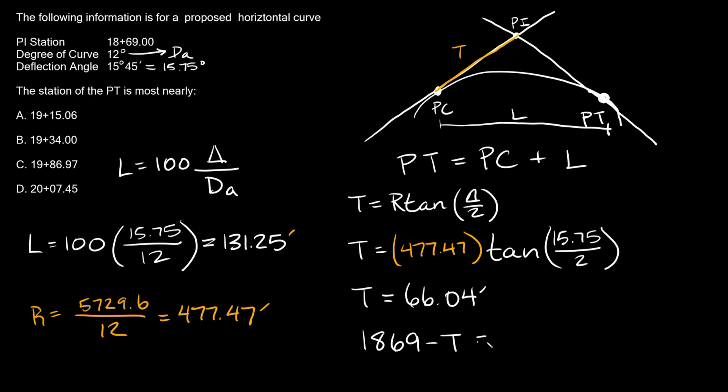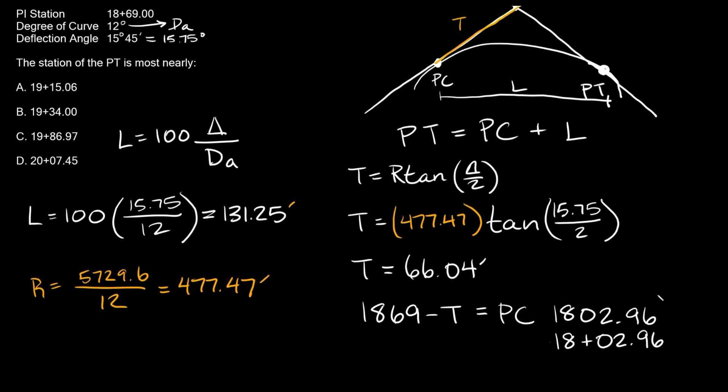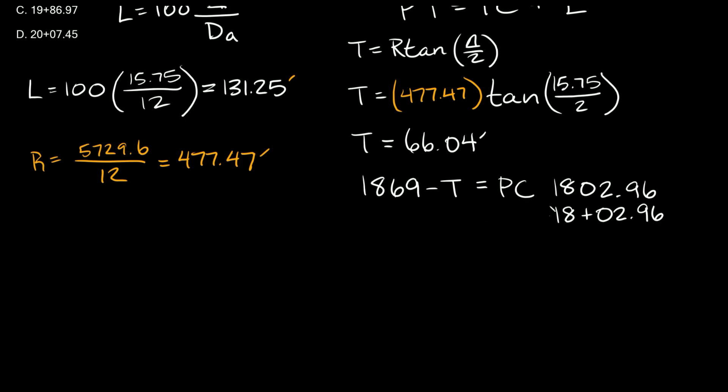And that's going to give us our PC station, which is at 1802.96. So the station for that would be 18 plus 02.96. I'm not going to write it as a station quite yet. I'm just putting that as a reference.